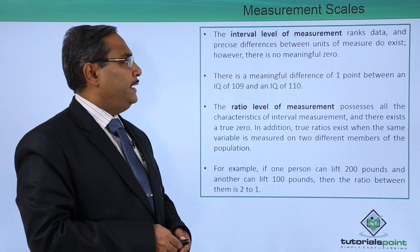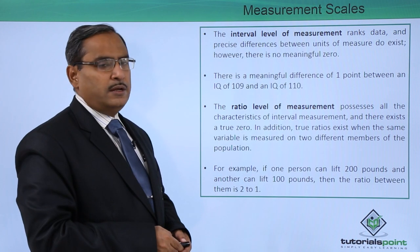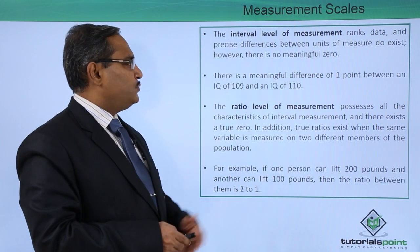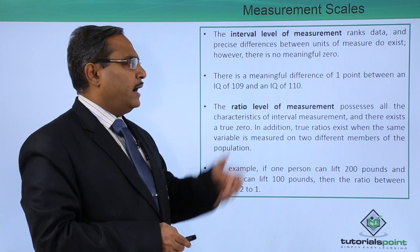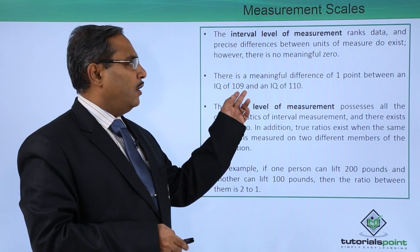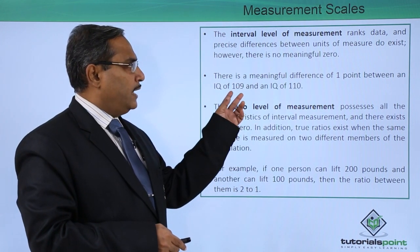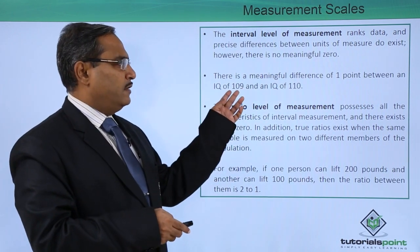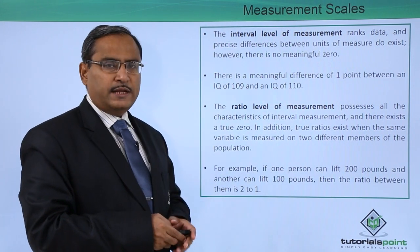The next one is our interval level of measurement. It ranks data and precise differences between units of measurement do exist. However, there is no meaningful zero. For example, there is a meaningful difference of one point between IQ 109 and IQ 110. So this is a good example of the interval level of measurement — it can rank data and also calculate the precise differences between units of measure, where the values 109 and 110 have a one point difference between them.